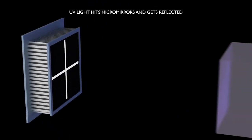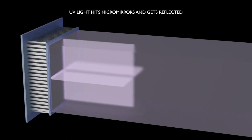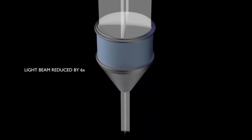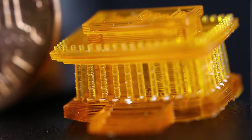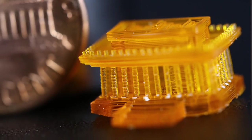To print with light, we send images through a data projector onto a special polymer. Those polymers will harden and solidify upon receiving photons from the light pattern.